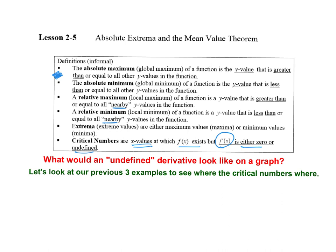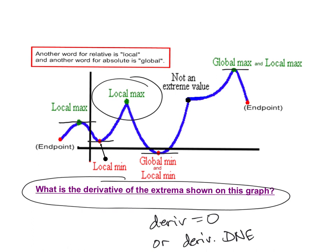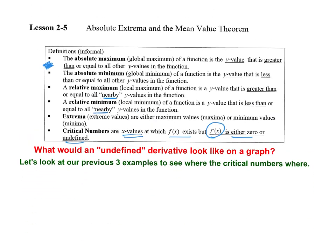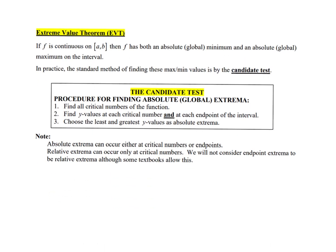Are all critical numbers going to be relative or absolute extrema? Actually, no. Look at this picture — right here at a sharp point, does the derivative exist? No. But was that an extrema? No. So what we do is find all of the critical numbers — every place where the graph either has a zero derivative or the derivative does not exist — and the original graph has to exist there. Then we just test each one of them and see if they are the absolute extrema.